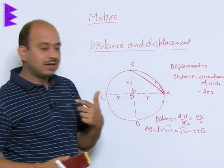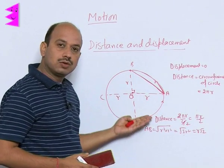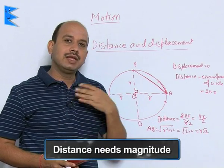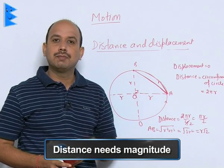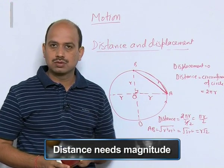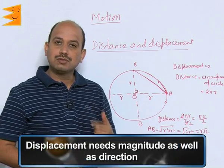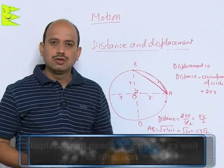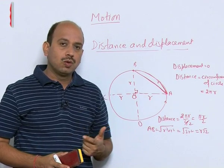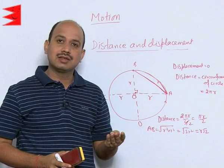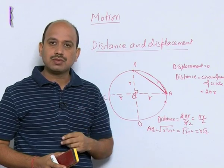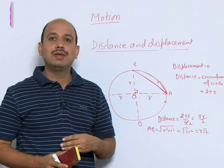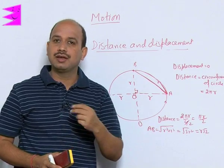We have seen two or three examples for distance and displacement. When describing distance, we only need magnitude, whereas displacement requires both magnitude and direction. So there are two types of quantities: scalars and vectors. We will study scalars and vectors in the next slide.